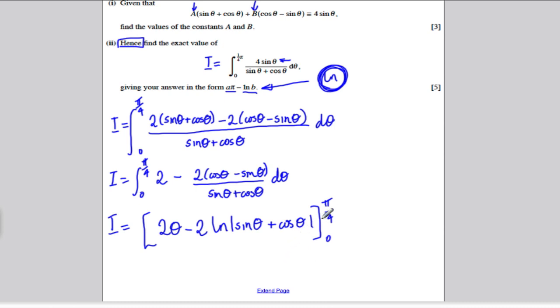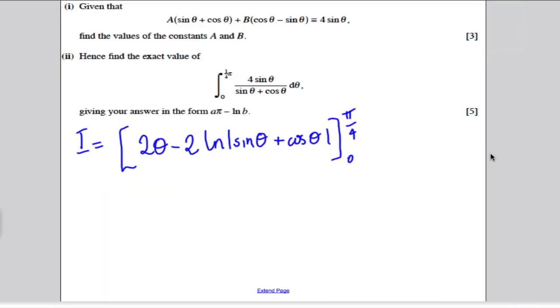Now, it's just a numbers game. I need to substitute in my pi by 4 and my 0. I've just taken that to the next page, just to make this slightly easier. So, this integral, therefore, substituting pi by 4 in here, I'll get pi by 2,